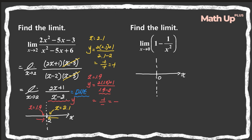As x approaches 0 from the left-hand side, let's pick a value — say x is negative 0.1. Then 1 minus 1 over x squared is 1 minus 1 over negative 0.1 squared, which is 1 minus 100, so that's negative 99. That means as x approaches 0 from the left-hand side, this function will decrease to negative infinity.